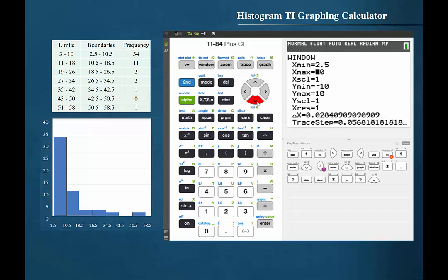Cursor down to the maximum line. This should be set so that the upper bound for the last class appears on the screen. The upper bound for the last class was 58.5. We will set the maximum value to 60 so that the entire histogram appears on the screen.